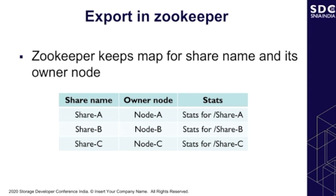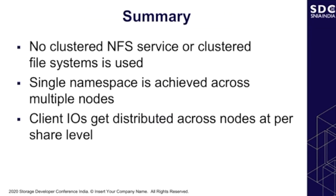This completes the NFS v4 access model: any readdir operation is served by all nodes, and when a client specifically accesses a share, it gets referred to the owner node. For example, share A will always be accessed through node A. In summary, this is how we build a clustered or single-namespace NAS without actually using a clustered NFS service or clustered file system. Since client I/O is distributed at the node level, this achieves scalability. Thank you all for your time.